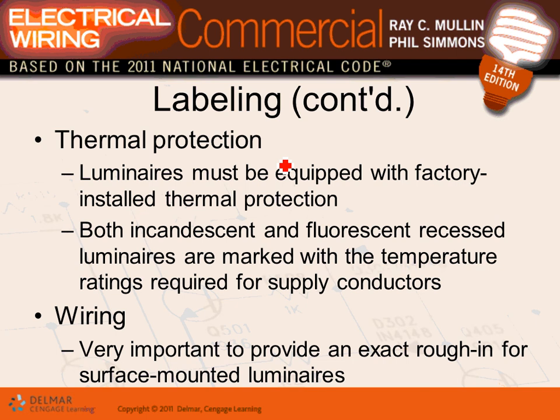Thermal protection: almost all cans — especially incandescent recessed cans — have to have a thermal protector from the factory. If you go to a house and a fixture keeps turning on and off, that means it's getting hot. There's a little thermal protector device — if it gets too hot inside the fixture, it opens and turns the fixture off until it cools down, then turns it on again. Fixtures above kitchens, for example, can start turning on and off when cooking generates heat. They're meant to protect you from burning your house.